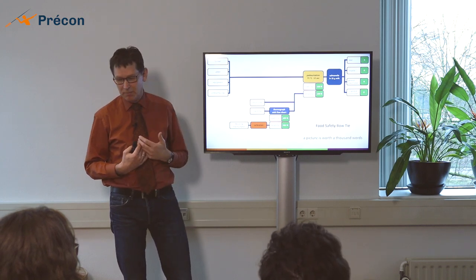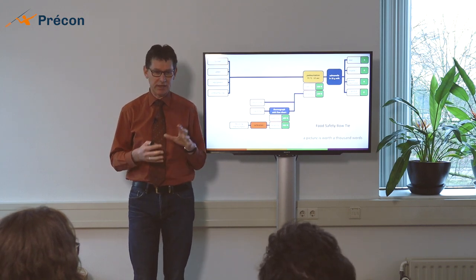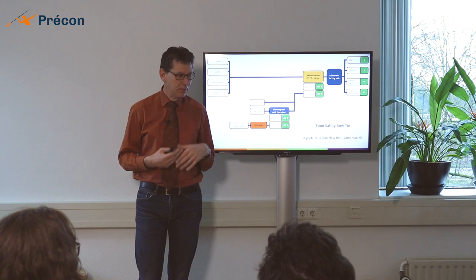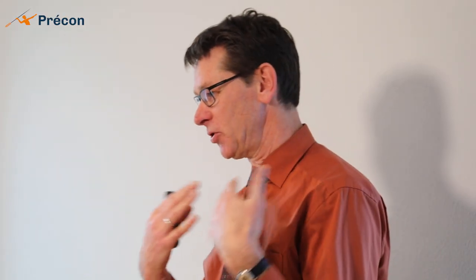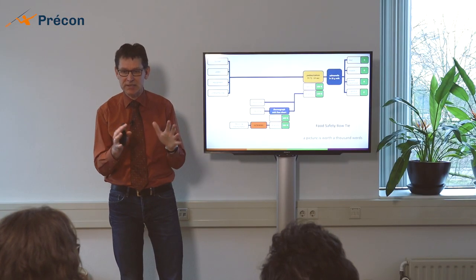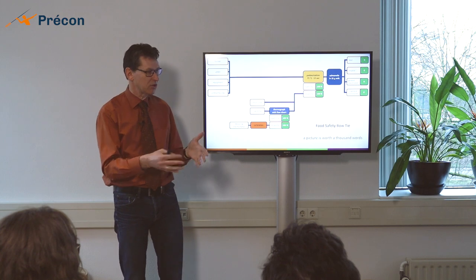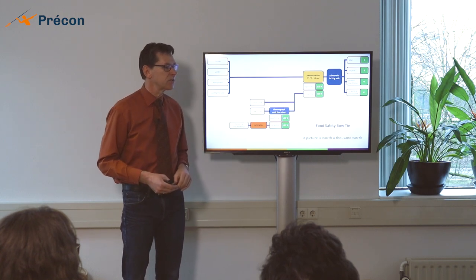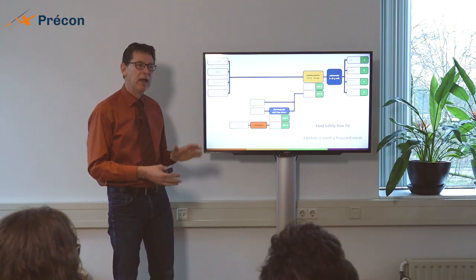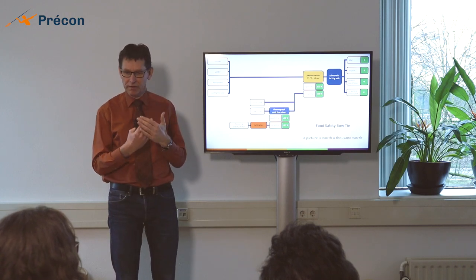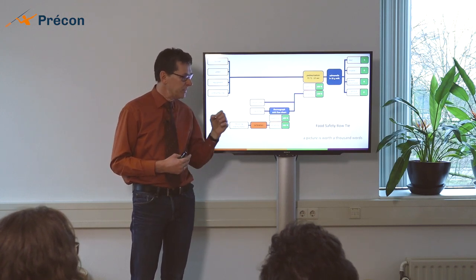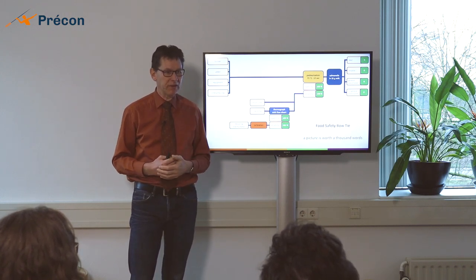Now, the strong point about this food safety bow tie is really that it's a picture. If you want to talk as a QA manager to your general manager because you want some investments on food safety and you're going to tell him about the ten definitions on HACCP, you'll be lost. You need to be able to explain your problem to your general manager within a couple of minutes. So you've got a little time. And this picture will help you very much with convincing the general manager that some things need to be done.